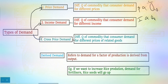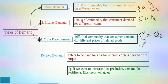The third type is cross price demand. Cross price means the price of related goods. When the price of related goods increases, the quantity demanded of the commodity increases, and vice versa. For example, when the price of tea increases, the demand for coffee will be higher. So there is a positive relationship between the price of related goods and the quantity demanded of the substitute commodity.